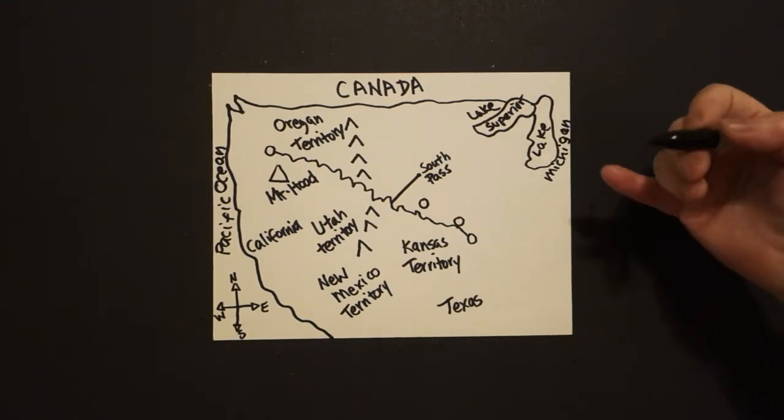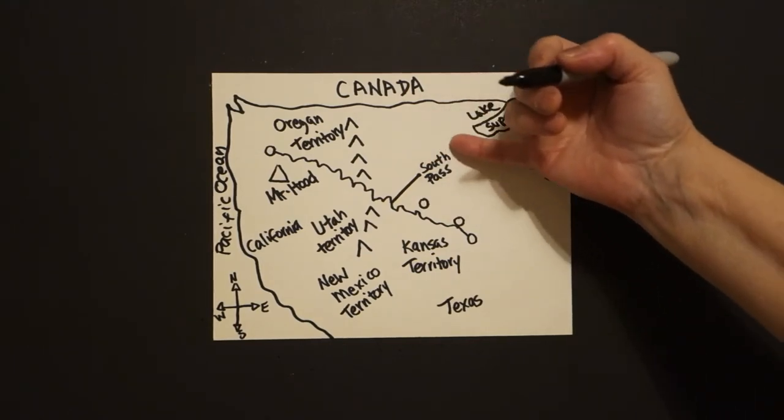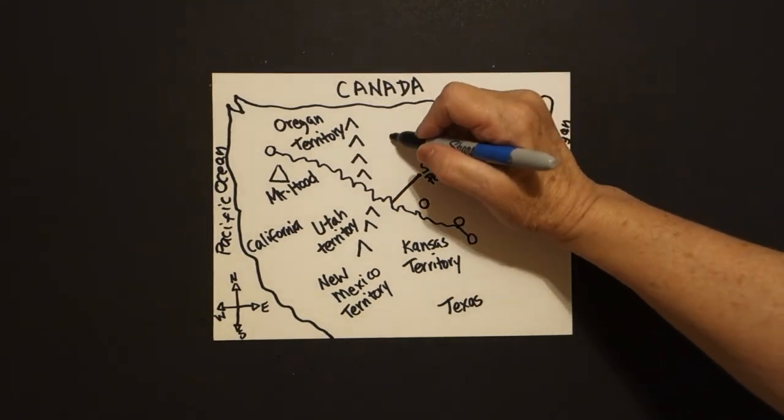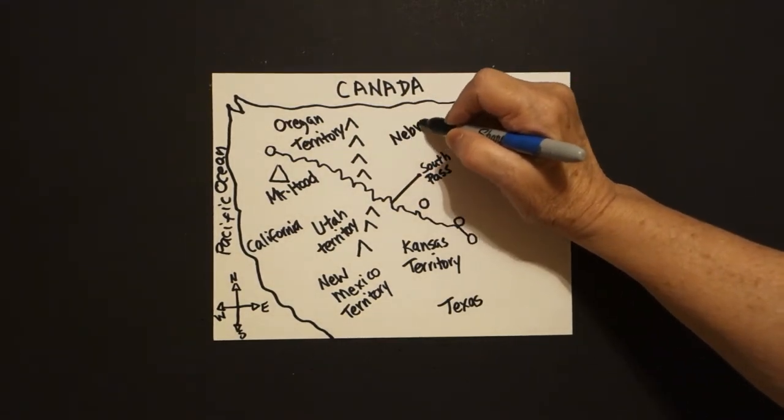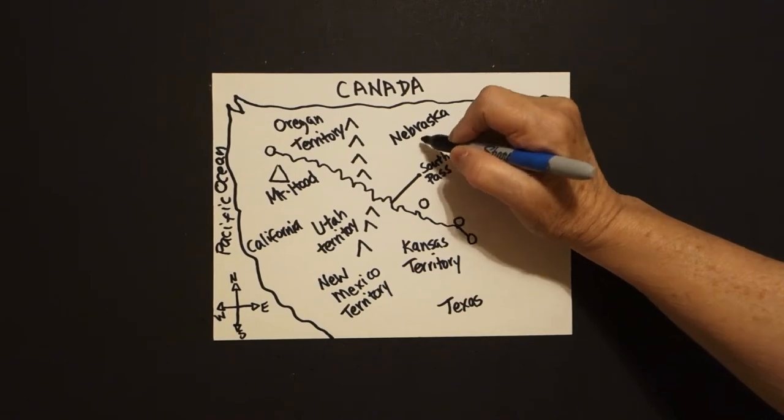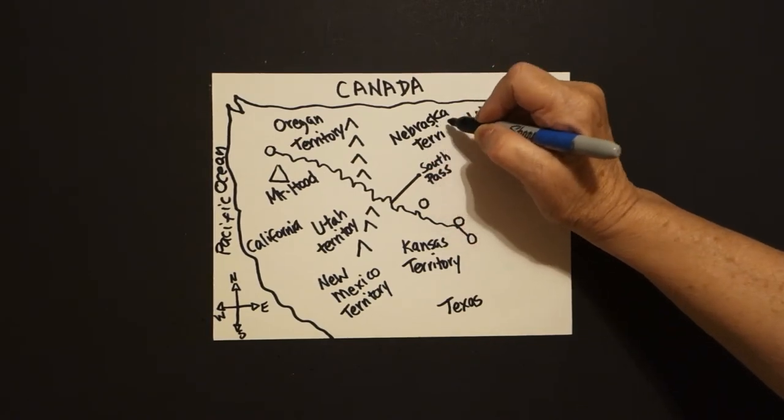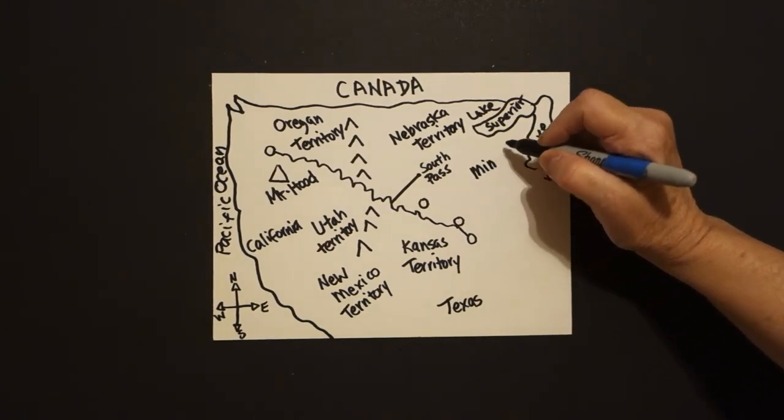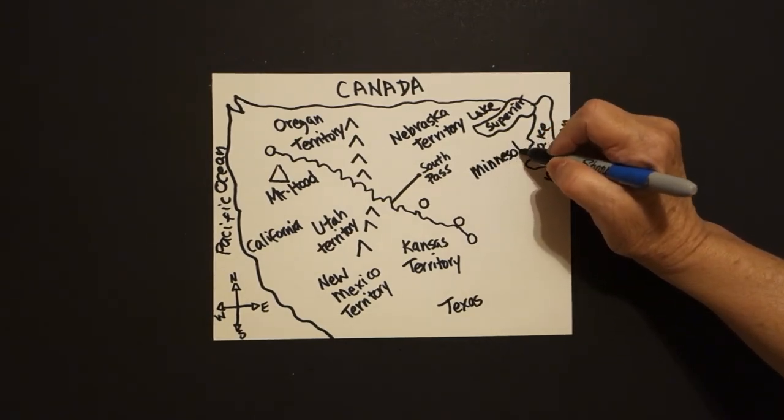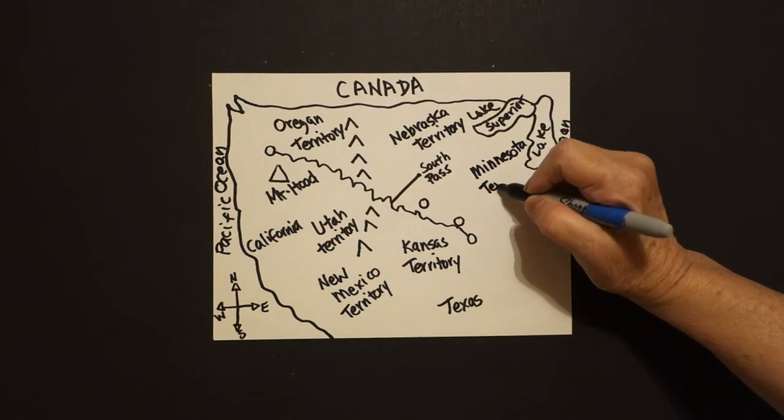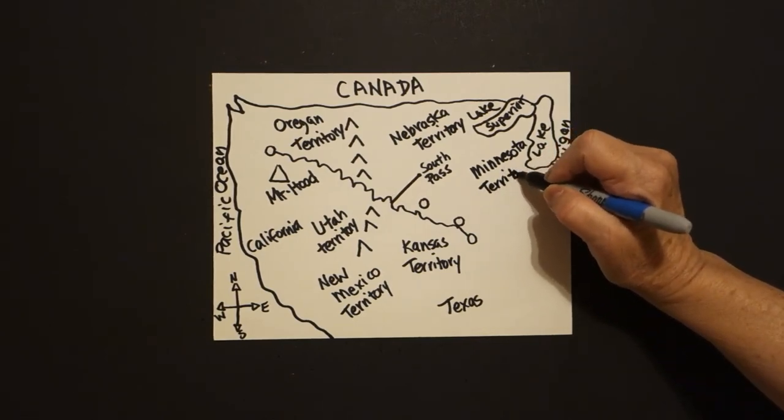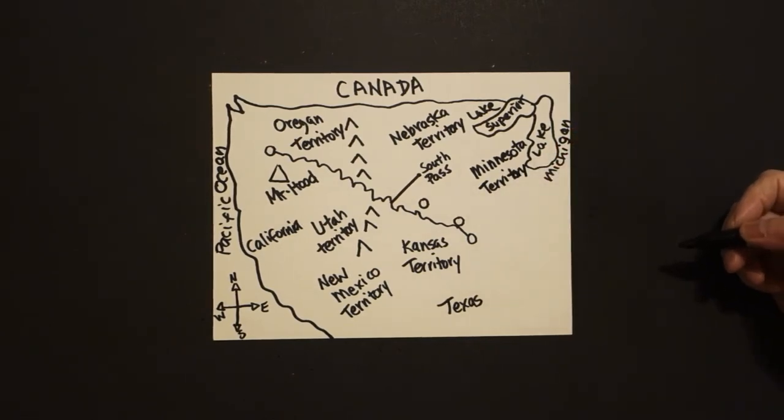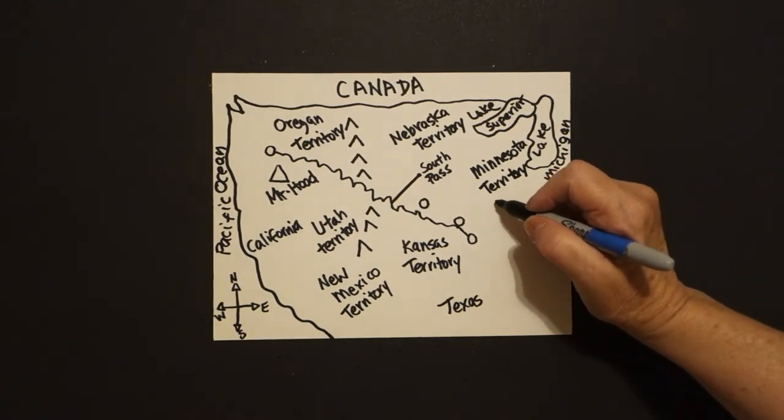Now, in between these spaces, you have the Nebraska Territory. Over by the lakes, you have the Minnesota Territory. Down below, you have Iowa.